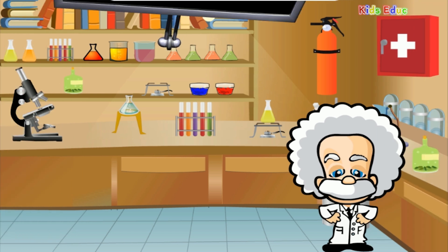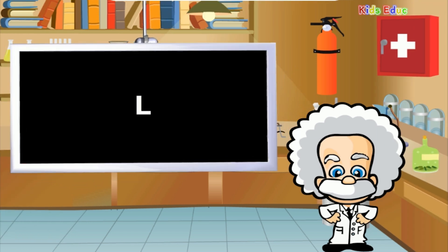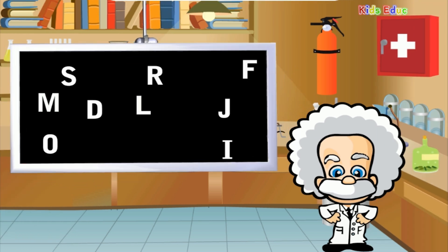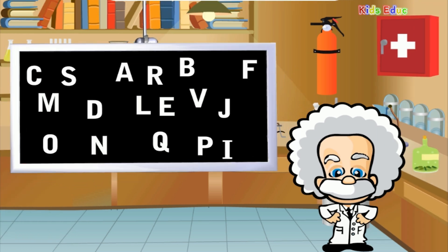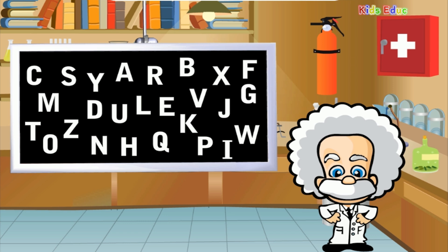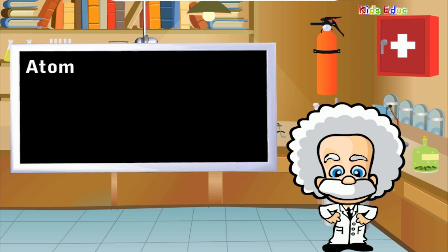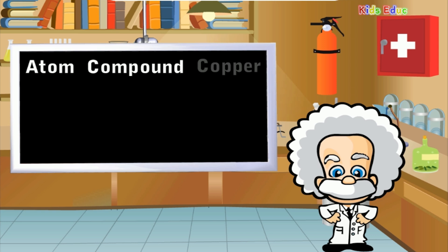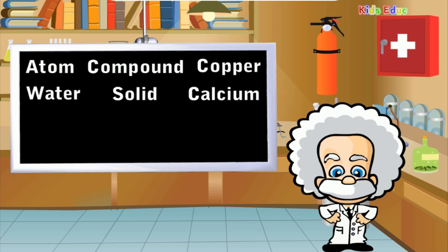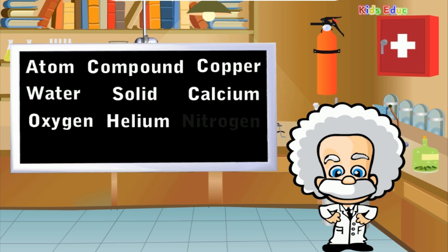Isn't it amazing that with a few letters we can write many words? For example, a combination of only 26 letters makes up every word in the English language. It's even more amazing that a combination of 118 elements makes up everything in the universe.